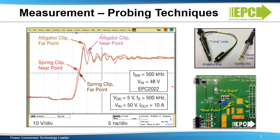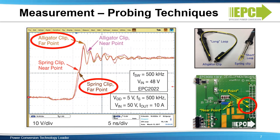To capture a reliable and high fidelity waveform, it is important to use a proper probing technique, together with a probe with low input capacitance and a short ground loop connection feature. The impact of using a long ground lead, such as an alligator clip, over a short one, such as a spring clip, is illustrated here. While the relative position between the probe leads is important, the absolute position of the leads does not impact the measurement as much. The far point is farther away from the EGAN FETS than the near point, but with the short ground loop, the corresponding waveforms are almost identical.